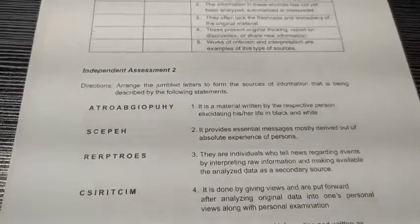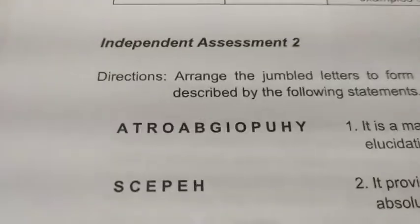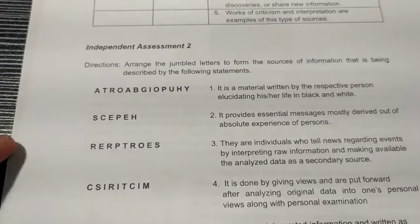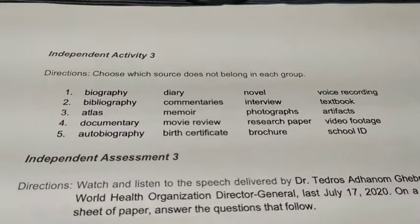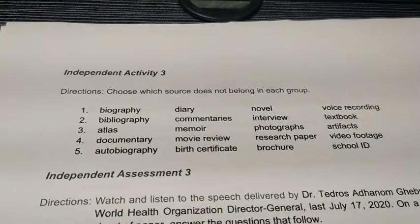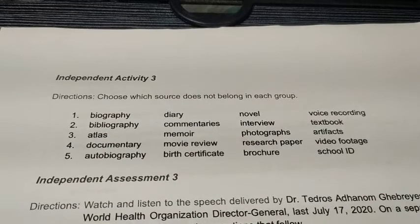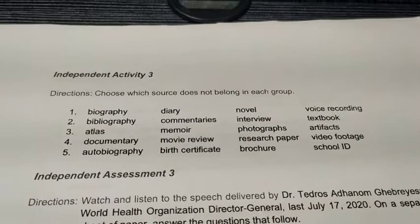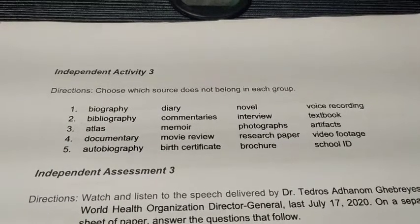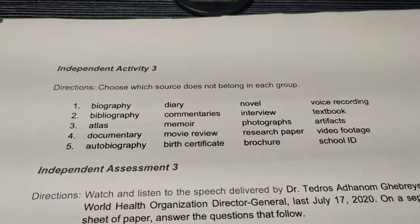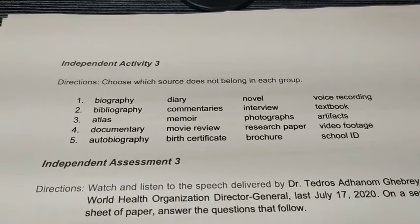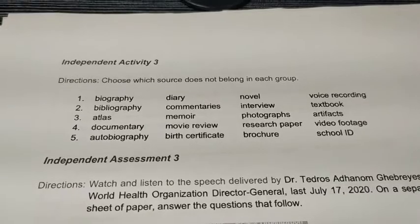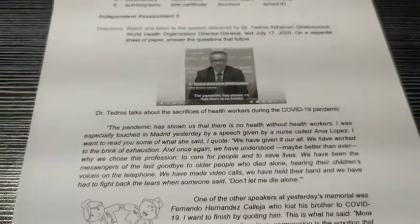For Independent Assessment 2, you will rearrange letters based on the clues given in each number. Write answers only on your answer sheet. For Independent Activity 3, choose which source does not belong in each group. Each number has four terms. You will write on your answer sheet the word that is not included in the group — for example, if three words are under primary and one is secondary, write the secondary word on your answer sheet.